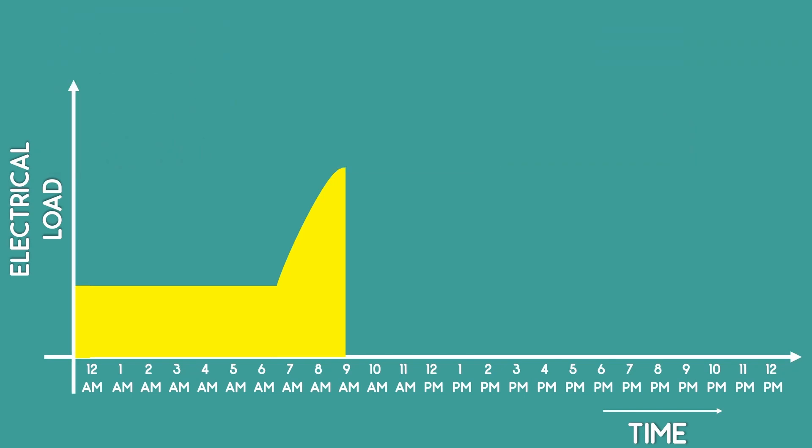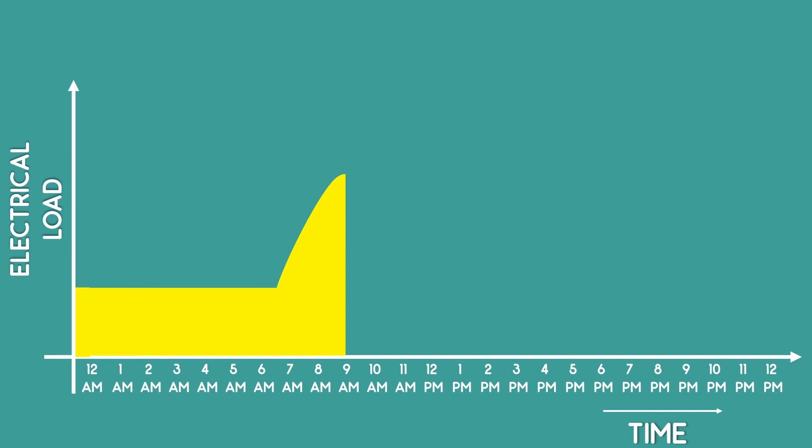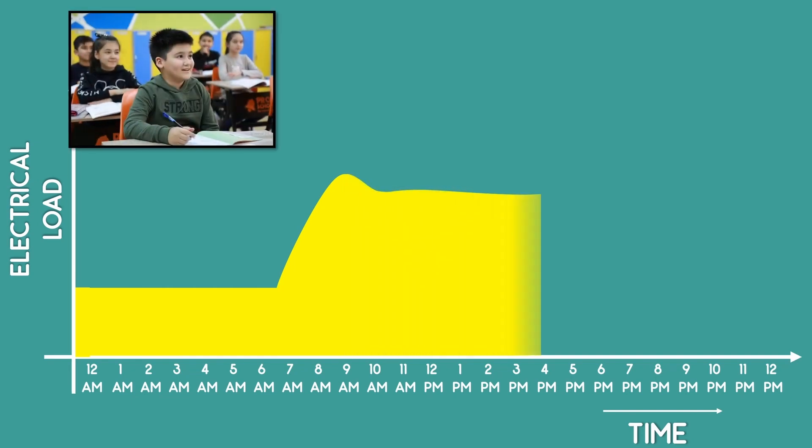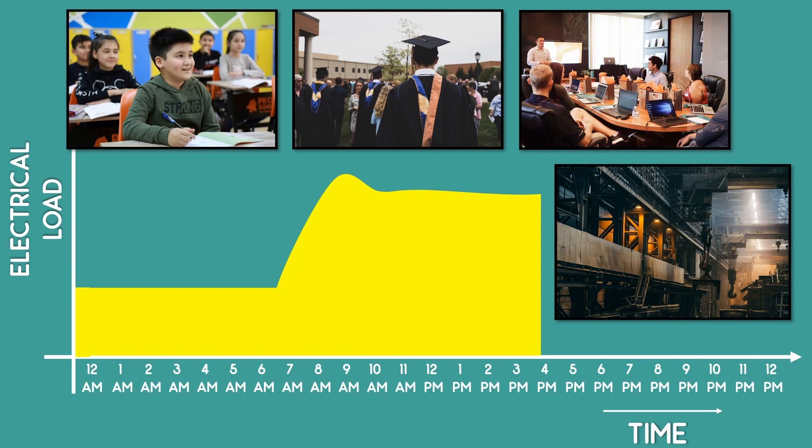By 9 o'clock, when everyone leaves home, the household's electricity demand decreases while schools, colleges, offices and industries' electricity demand increases.